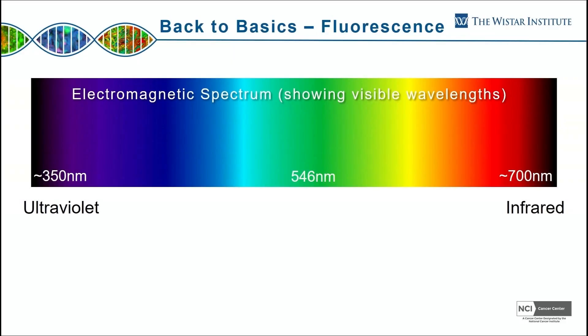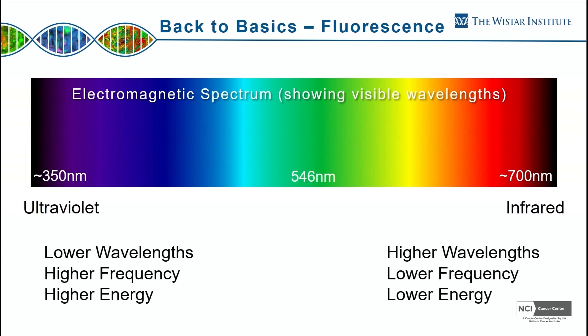You probably recognize the spectrum here, ranging from the ultraviolet over to the infrared range. The numbers we're dealing with are down in the 300s and low 400s up to the 700s and 800s. What's important to understand with fluorescence is that at the lower wavelengths — the ultraviolet — you have a higher frequency and higher energy output, versus at the higher wavelengths, you have a lower frequency and lower energy.